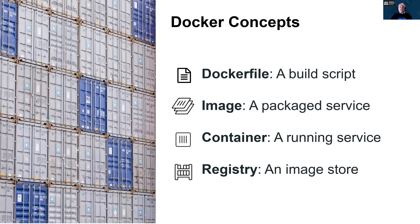Before we get to the demo, let's look at some basic Docker concepts. The Dockerfile is a build script that contains the instructions to build a container image. The output of that build is the image, which is essentially a packaged service. When we run an image, it becomes a container, which is an instance of the image. The container registry is a place for storing images — similar to a source repository, but it's called a registry.